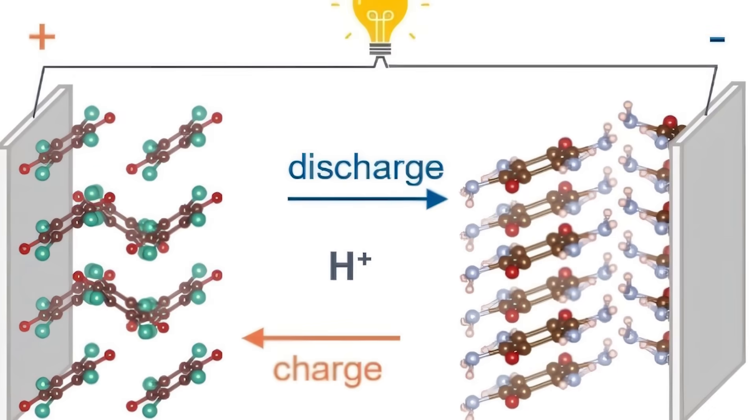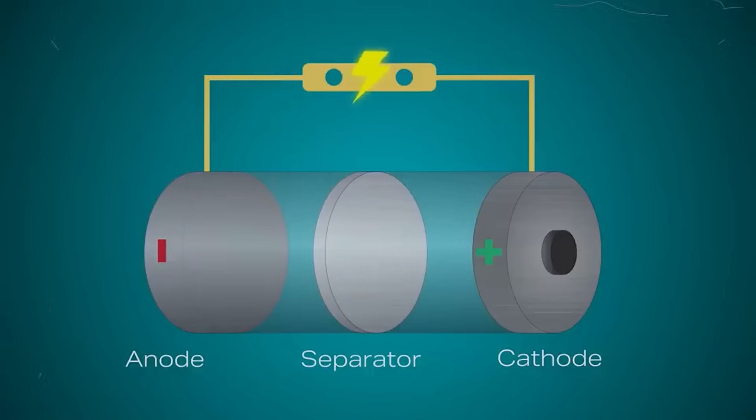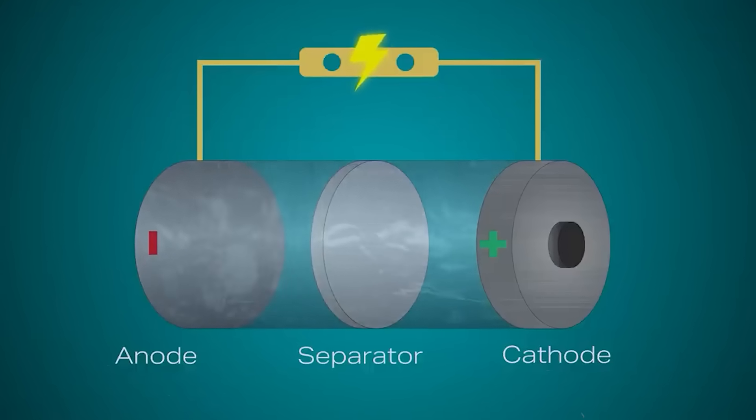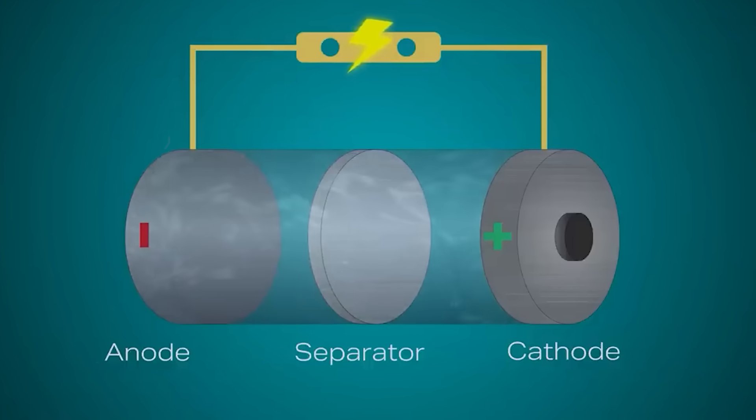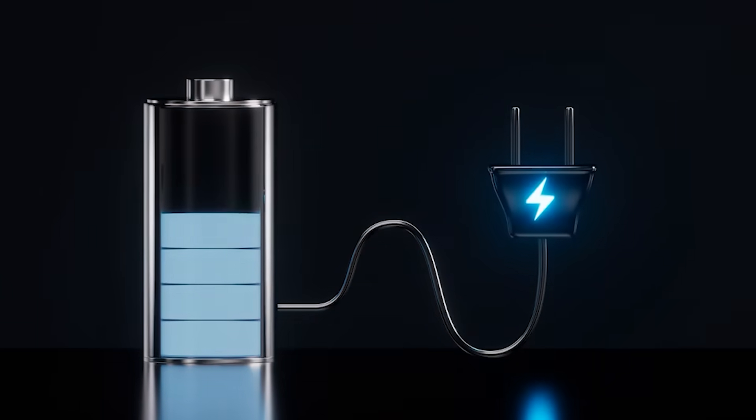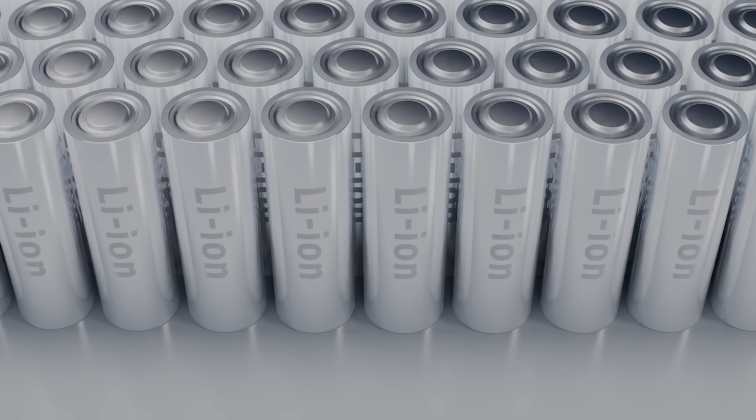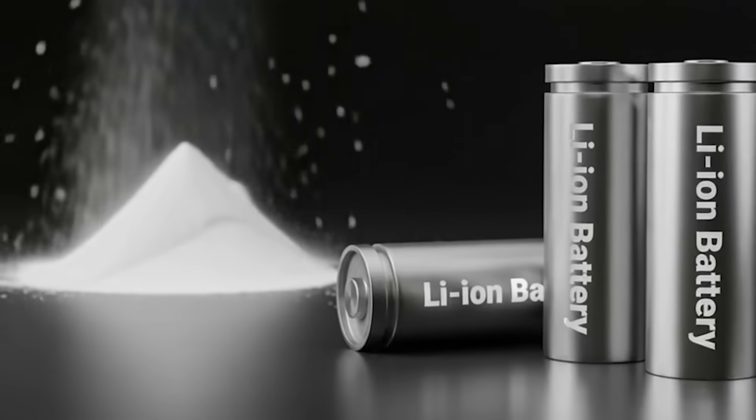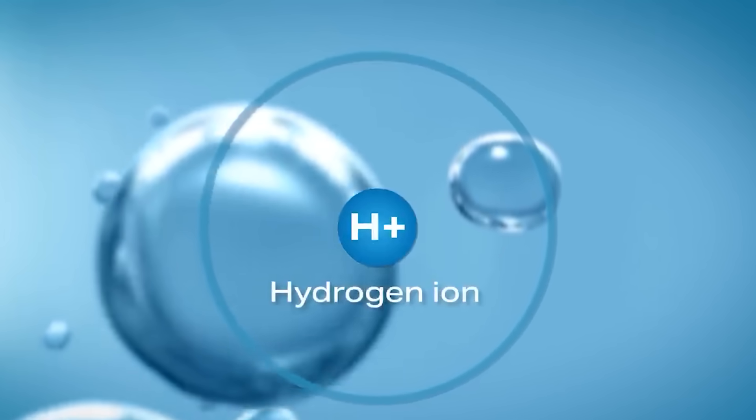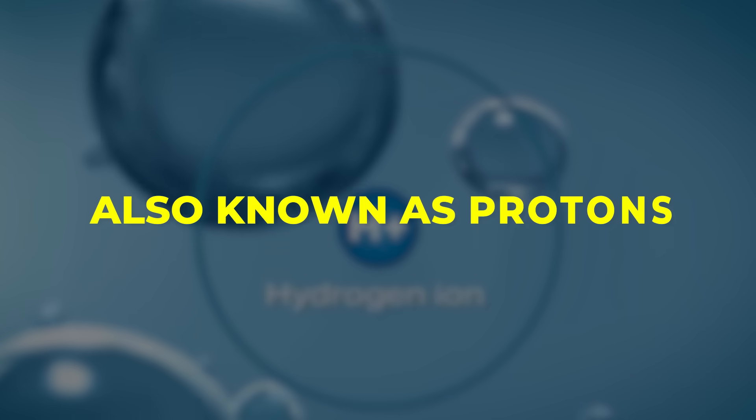When the battery is charging, protons are stored in the anode. When it discharges, those protons move through the electrolyte towards the cathode, releasing electrical energy in the process. The difference from a lithium-ion battery is the type of ion that moves. Instead of lithium ions, this system uses hydrogen ions, also known as protons.